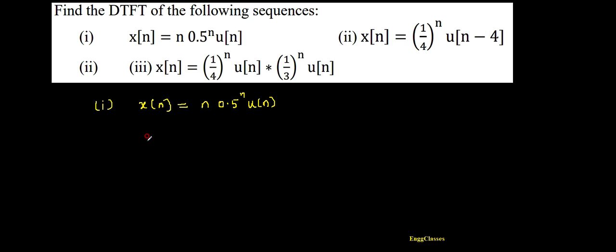...should know the equation of DTFT. x[n], its DTFT is represented as X(e^(jω)), which is equal to summation n = -∞ to ∞ of x[n] * e^(-jωn). Once we know this formula, we can find the DTFT of any sequence.